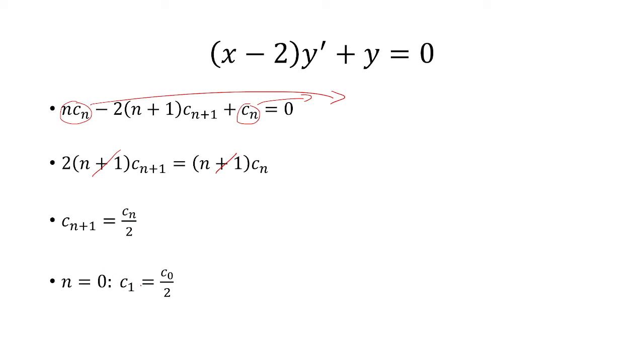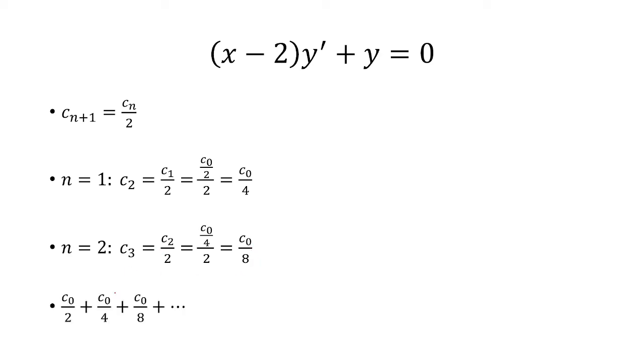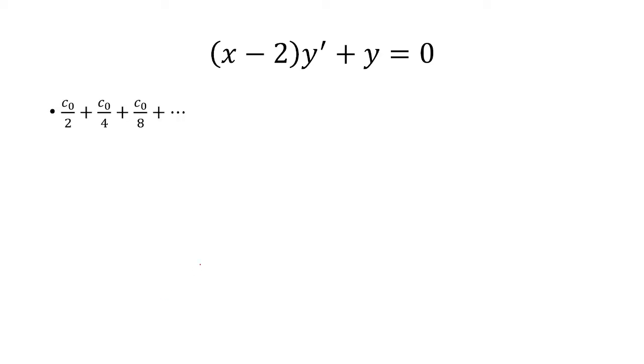So if I let n equal 0, c sub 1 is c sub 0 over 2. And if I let n equal 1, I get c sub 0 over 4. n equals 2, I get c sub 0 over 8. And so this is the pattern that I get, basically multiplying the denominator by 2 and keeping the numerator the same.